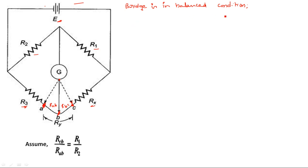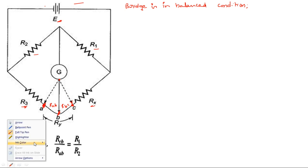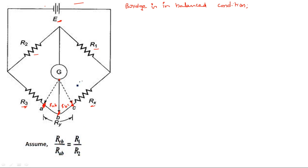When the bridge is in balanced condition, we know the Wheatstone's formula: R4 = R2·R3/R1. Applying this here, the resistance in the fourth arm is Rx plus RBC. So equation 1 becomes: Rx + RBC = R1·(R3 + RAB)/R2, because R3 is not purely R3 — it has the lead resistance RAB added to it.